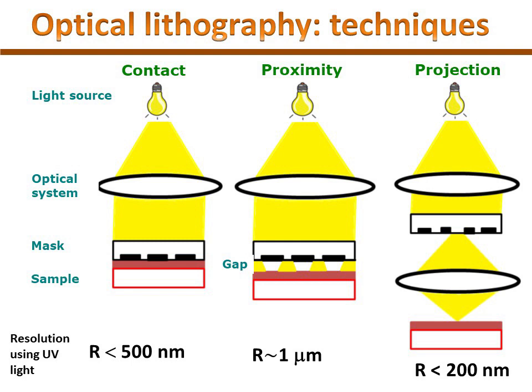To overcome the drawbacks of the two previous approximations, a complex system of lenses placed in between the glass mask and the sample allows us to achieve good resolutions without contamination, around 200 nm. This approximation is called the projection technique, and is the most expensive approximation, but is the most popular to attain smaller resolutions and mass production.